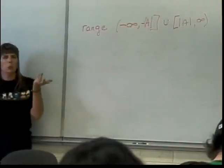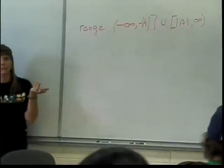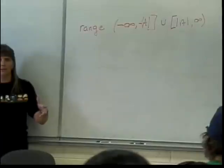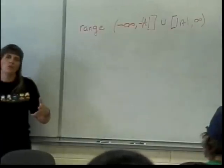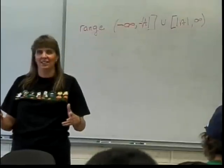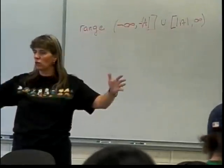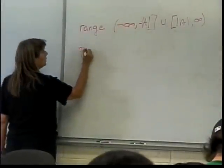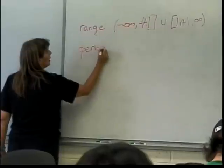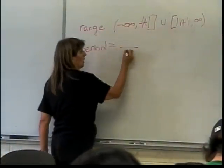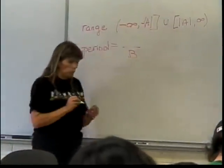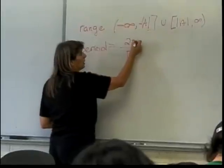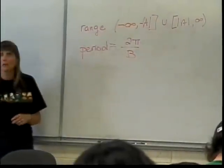What's B going to do? Yeah, it's going to do this: stretch or shrink horizontally. And when I mess with things horizontally, that messes with what? The period. Now, just like over here, it's going to be something over B. What is going to be up here? That's right. 2π because the original period of my secant and my cosecant are 2π.